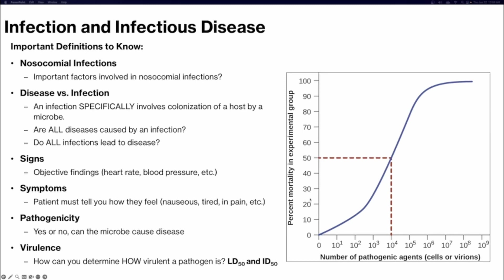The LD50 graph shows percent mortality. You calculate the LD50 by looking at 50% of the population and seeing at what number of pathogenic agents — cells, virions, or whatever the infectious agent is — leads to mortality in 50% of that population. For example, 10^4 pathogenic agents might lead to death in this experimental group. Importantly, a lower number of pathogenic agents required to lead to mortality means that pathogen is more virulent — fewer cells or virions needed to cause mortality means higher virulence.